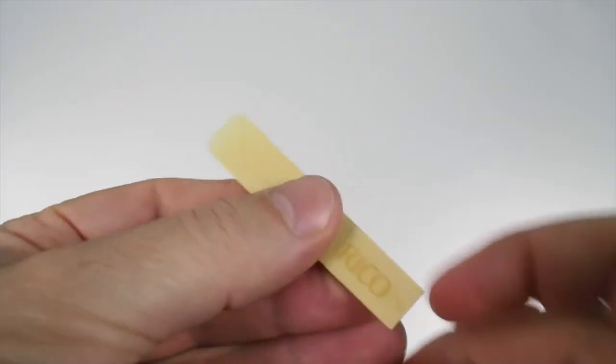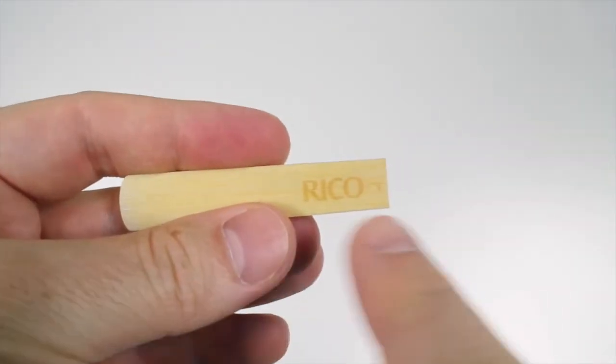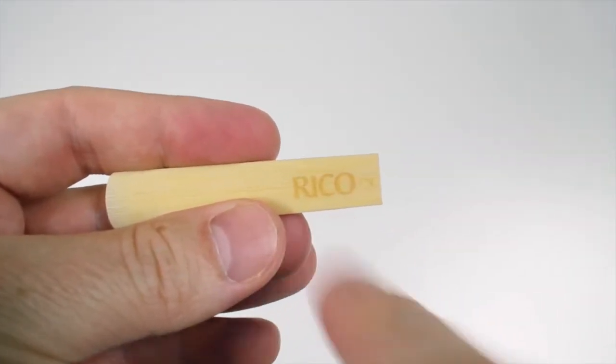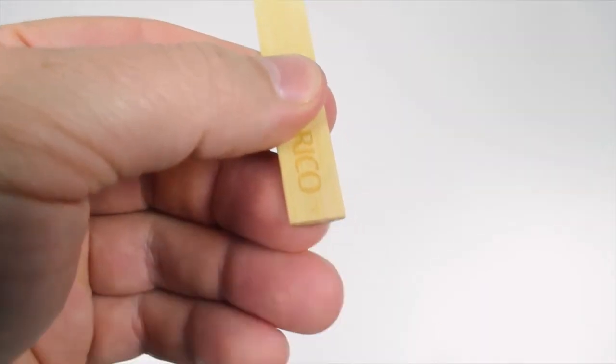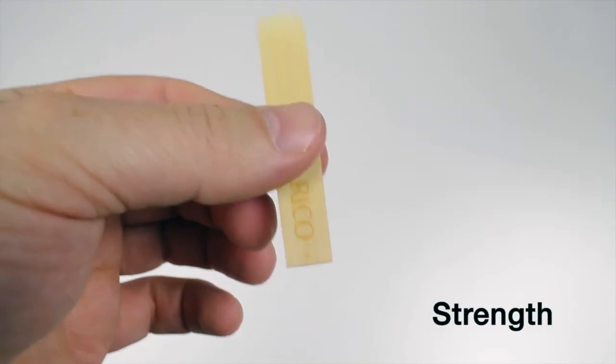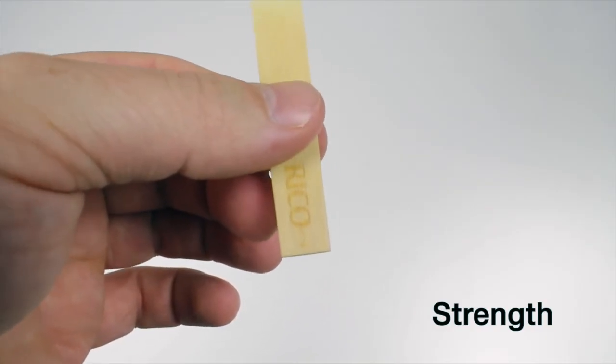Turn your reed over and look at the back. You'll see the name of the company that made your reed. This is a Rico reed. And you'll also see a number printed there. Can you see that number too? This number tells you the strength or the thickness of the reed.